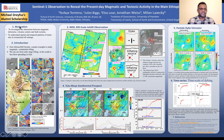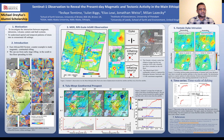The motivation behind this work is to investigate the interaction between magmatic intrusion, volcanic centers, and fault systems, and to understand spatial and temporal patterns of strain rates in the extension and rift setting. As background, the East African rift system is an archetype of magmatic continental rifting, ranging from early stage rifting in the Malawi rift in the south to later stage rifting or seafloor spreading in Afar.